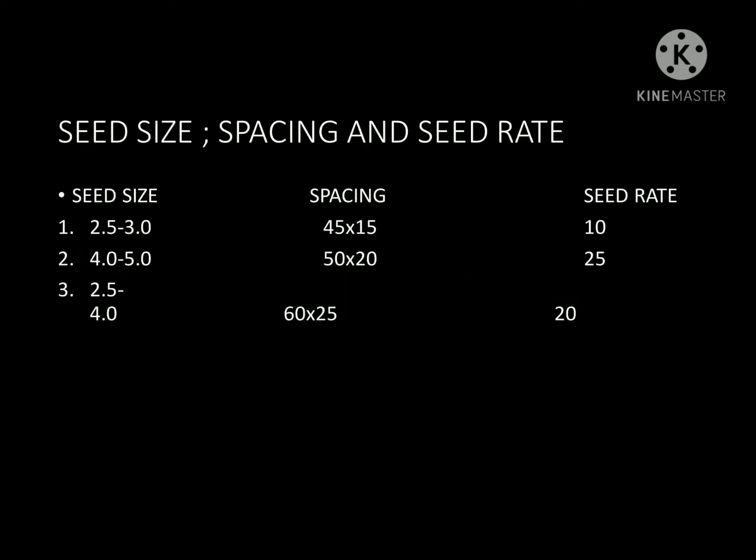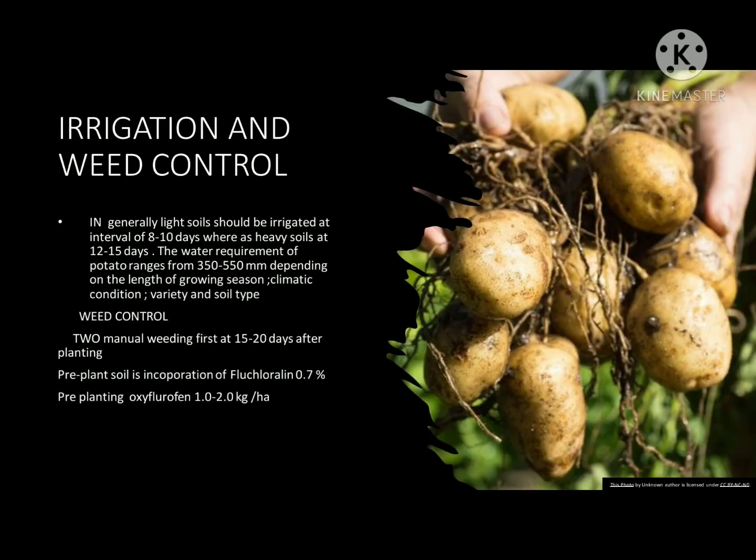Seed size, spacing, and seed rate: seed size is 2.5 to 3.0 cm. Spacing is 45 cm x 15 cm or 50 cm x 20 cm. The seed rate is approximately 25 quintals per hectare.